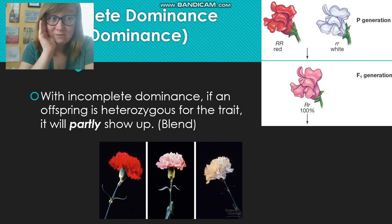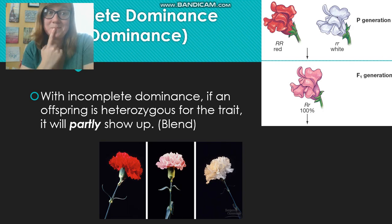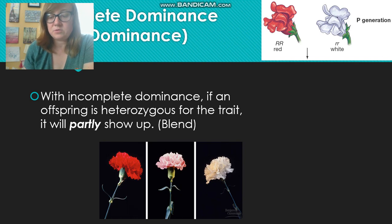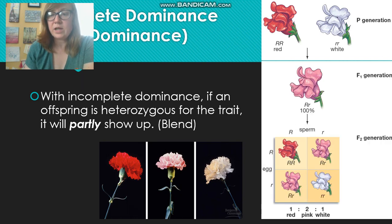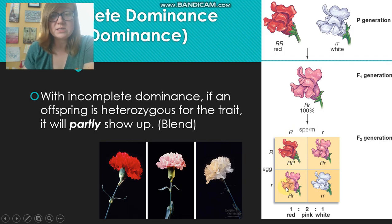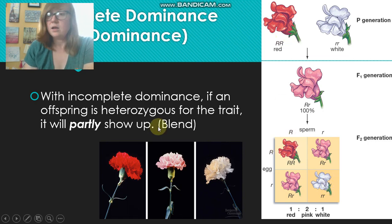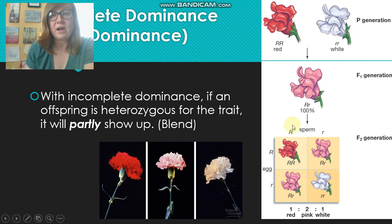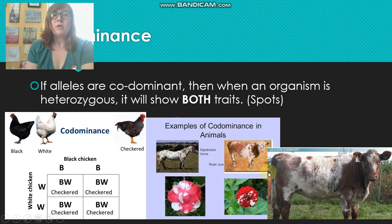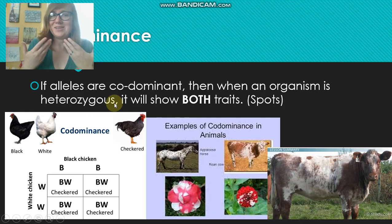If we cross pink flowers together, this is what we would see: 25% red, 50% pink, and 25% white. So we'd see the original grandparent colors reappear. You can pause and look at how this Punnett square has been set up and why it is the way it is.